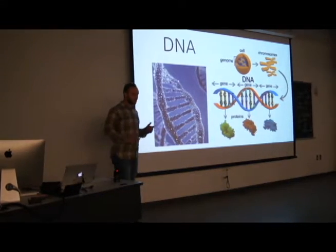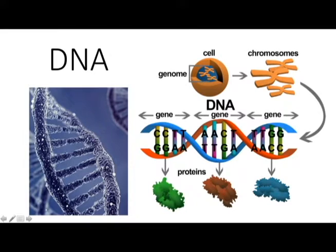I'm sure you've all heard about DNA. It's something that we have in every single cell in our body and it's kind of unique to each one of us. Essentially what DNA is, it's a blueprint for the construction of these things called proteins and enzymes. And the blueprints are actually called genes. Each one of these genes is a blueprint for a protein or an enzyme.